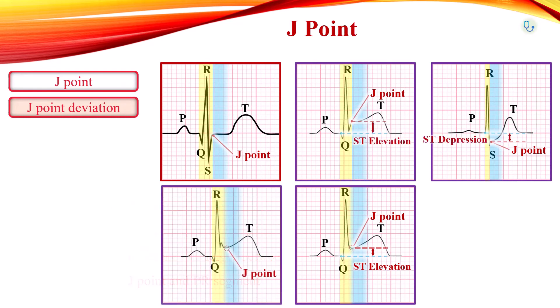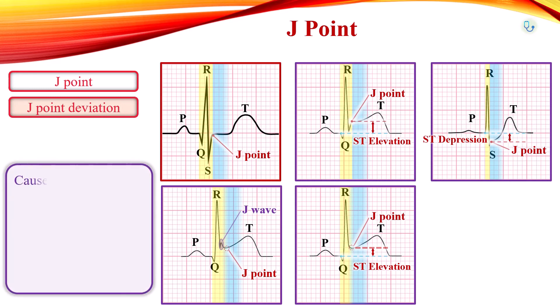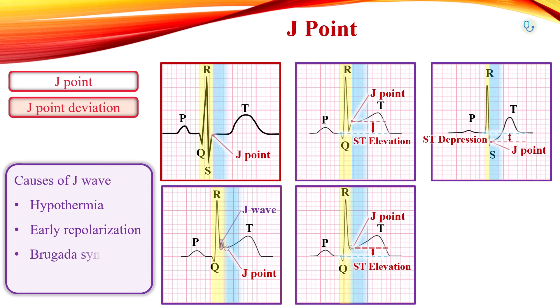The J-wave is a deflection that occurs before the J-point, and the J-point and J-wave are totally different and unrelated events. A positive deflection prior to the J-point, termed the J-wave or Osborne wave, is characteristically seen with hypothermia. J-waves can also be seen in early repolarization, Brugada syndrome, and hypercalcemia.